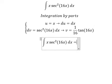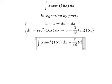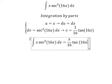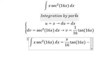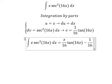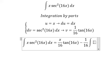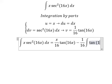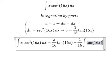So we have u multiplied by v, which gives us x over 16 times tan of 16x, minus the integral of du multiplied by v. So we have 1 over 16 times the integral of tan of 16x dx.